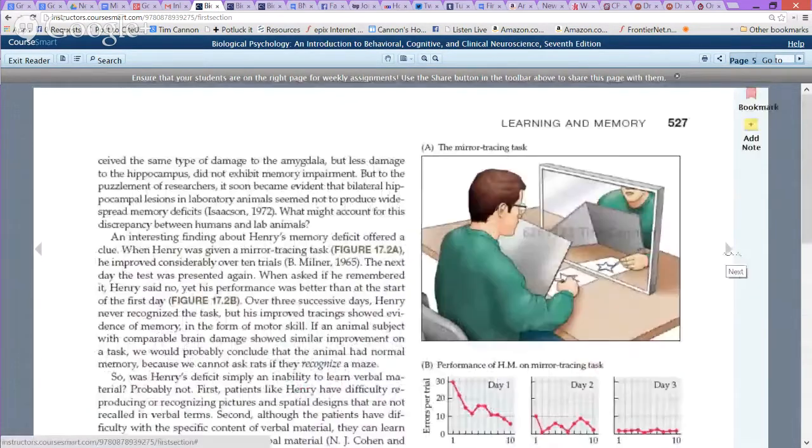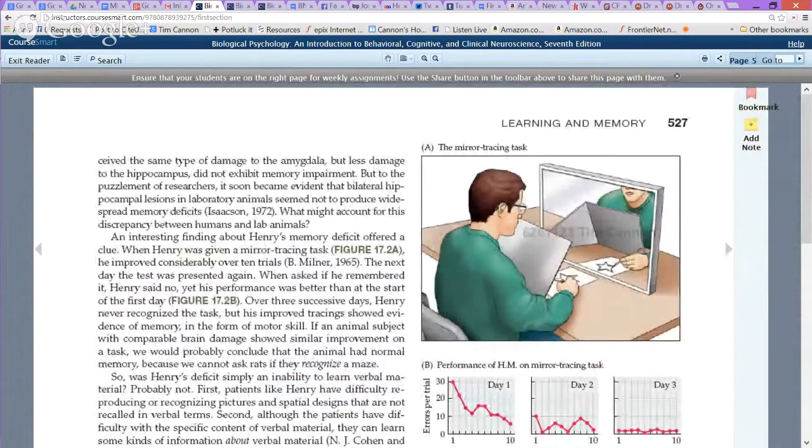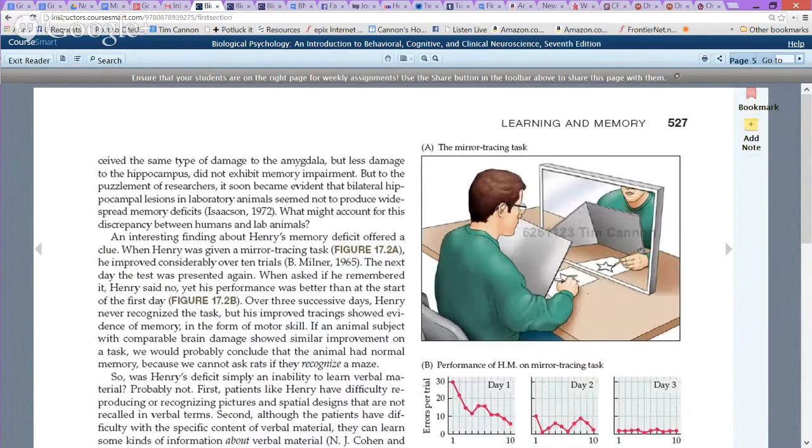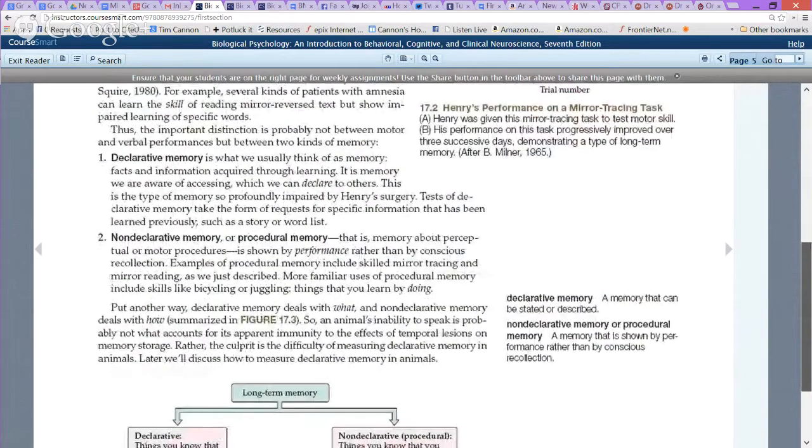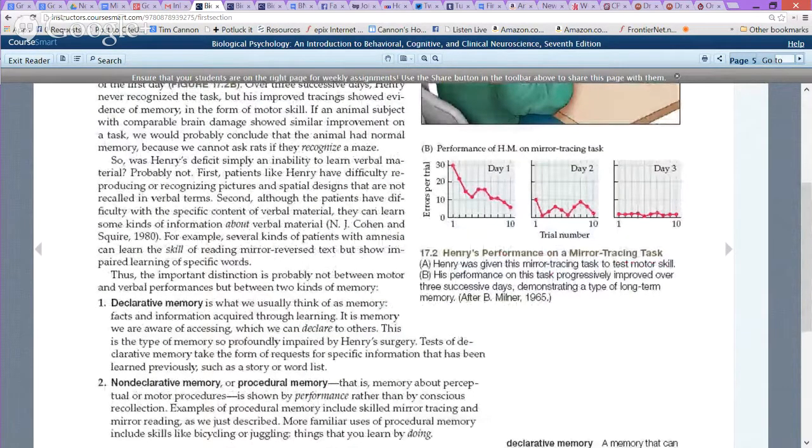One task that HM was able to do remarkably well is called the mirror drawing task, which is on page 527. And this is a nightmare to do, at least for me, if you haven't done it before. You can't see your hand, but you can see your hand in the mirror, so things are reversed. And you have to keep your pencil within a double-line star. Normal people don't do very well on the first day, but they get better over days. HM didn't do very well on the first day, but got better over days. Yet declaratively, declarative memory, he always had to be told what the thing was. He said he never saw it before, and yet he did show improvements. And by the way, notice that Brenda Milner's name is down here, 1965.